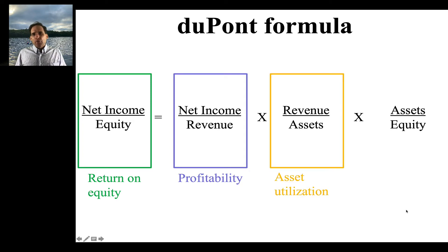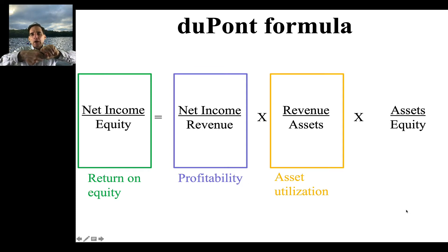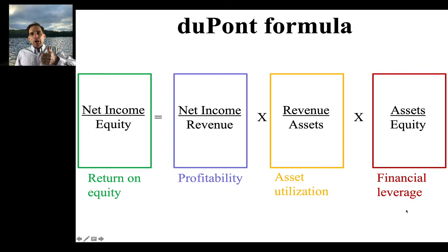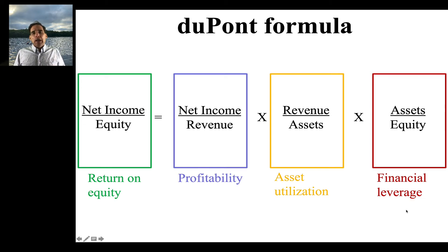Revenue over assets is really a measure of asset utilization — how much revenue you can squeeze out of every dollar of assets. And then assets over equity is a measure of financial leverage. If you have high assets over equity, that means your assets are high and your equity is low, which means you've taken on a lot of long-term debt. The higher your financial leverage, the more debt you have, because debt plus equity equals assets.